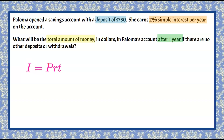P is our principal — that's the amount of money we put into our bank account, or if you're borrowing, how much you borrow from the bank. R represents your interest rate, written as a decimal. And T is the amount of time you're either saving your money or, for a loan, how long you borrowed it for. We're focusing on savings here, but this formula works for loans as well.